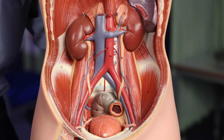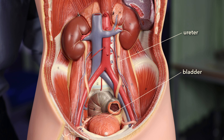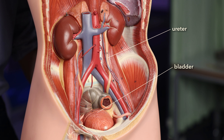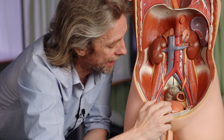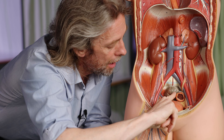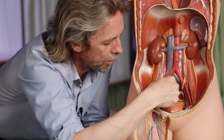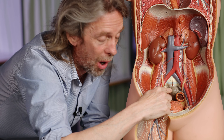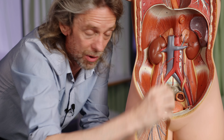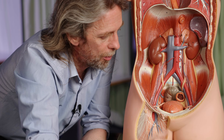The ureters run from the kidneys down to the bladder up against the posterior abdominal wall. With the parietal peritoneum removed, the ureters are also retroperitoneal. The peritoneum drapes over the organs of the pelvis - the bladder is retroperitoneal, with the peritoneum superior to it. The ureter runs to the bladder and the bladder is retroperitoneal. Likewise the rectum - the sigmoid colon becomes the rectum and descends. Part of the rectum is intraperitoneal, but as it descends and becomes a pelvic structure, it is also retroperitoneal.